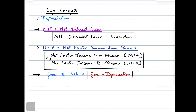The second concept is net indirect taxes. Net indirect taxes are calculated as indirect taxes minus subsidies. Indirect taxes are levied on the consumption of consumers — when you purchase goods and services, the MRP is inclusive of these taxes. For example, in India we have GST: whether you buy a movie ticket, a drink, or clothing from a mall, the price includes the GST component. Subsidies, on the other hand, are financial grants given by the government to producers to produce more of a particular commodity. So NIT = indirect taxes minus subsidies — a very important formula.